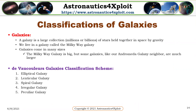Classifications of galaxies. A galaxy is a large collection, usually millions or billions in number, of stars which are held together in space by gravity. We live in a galaxy called the Milky Way galaxy. Galaxies come in many sizes. The Milky Way galaxy is big, but some galaxies, like our Andromeda galaxy neighbor, are much larger. The Hubble Galaxy Classification Scheme is given as follows: elliptical galaxy, lenticular galaxy, spiral galaxy, irregular galaxy, and peculiar galaxy.